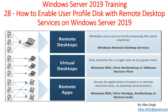Whenever a user randomly logs into any of the RDS session host servers, they are going to get a different profile on each session host server. For example, if a user logged into session host server 1 and saved something on the desktop or in their documents or downloads, and next time they get a session on session host 2, they are not going to get the same profile or their data. To overcome this issue, Microsoft introduced user profile disk, which we can enable in RDS so that users always get the same profile no matter which session host they log into.